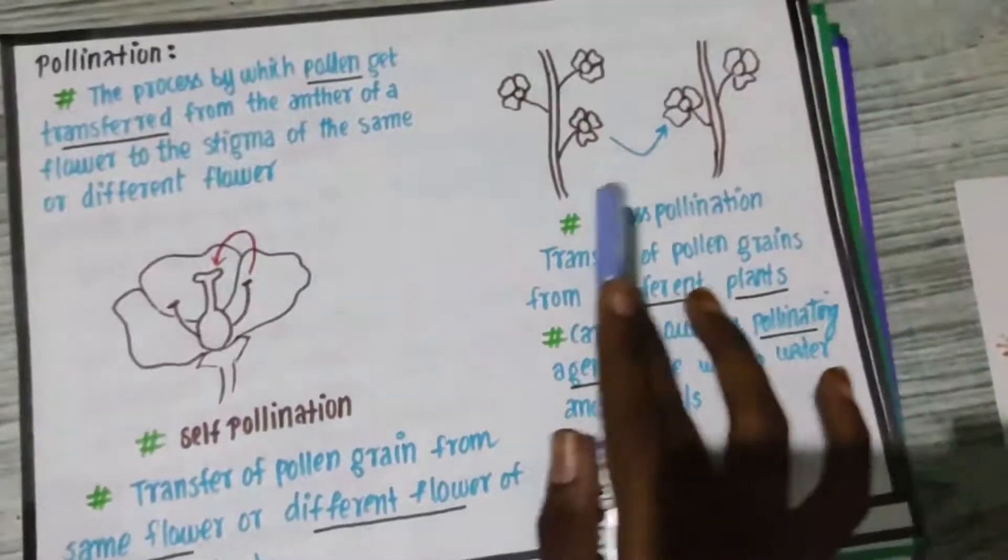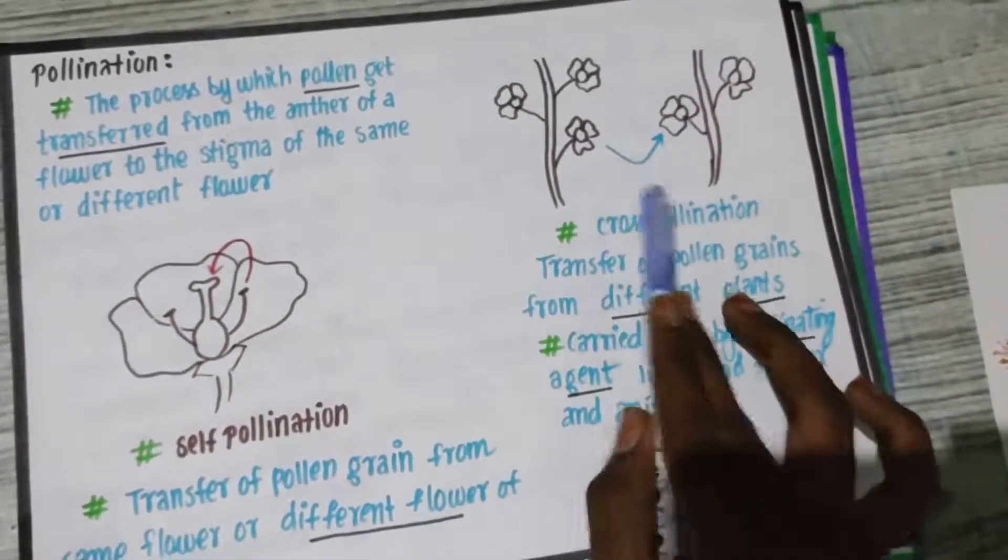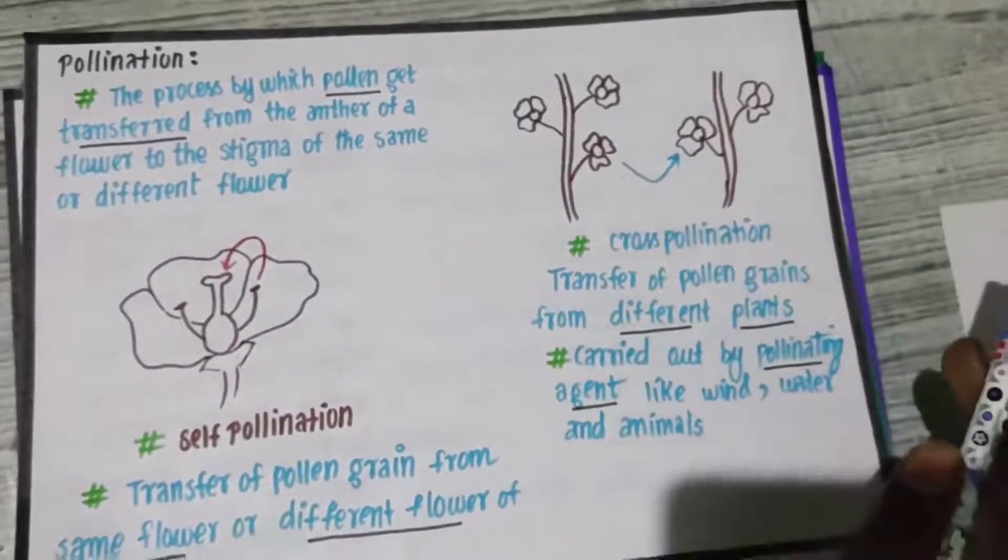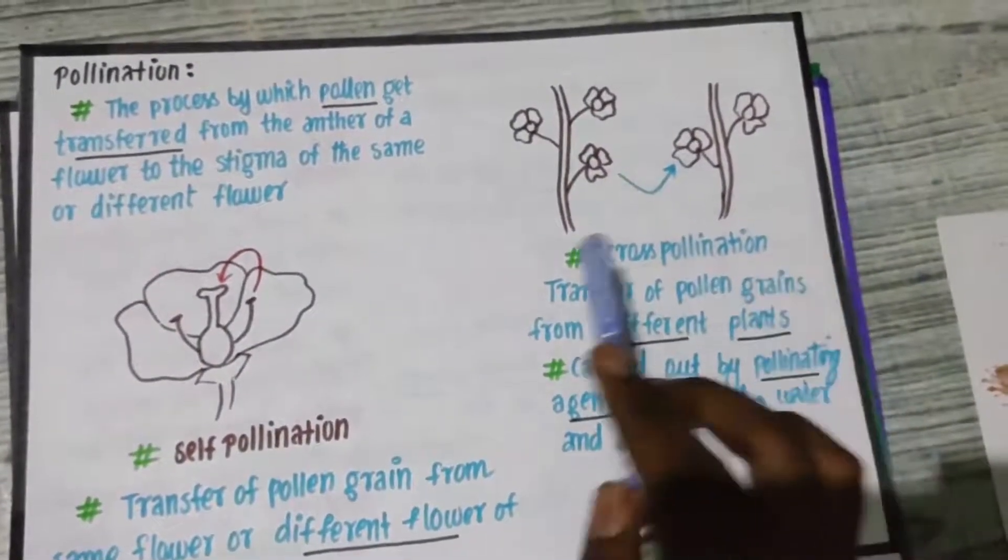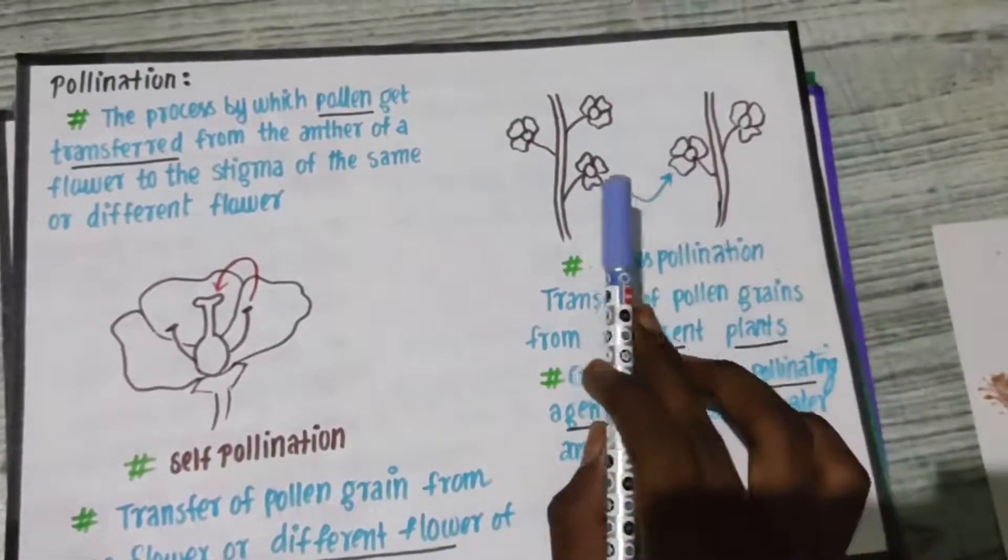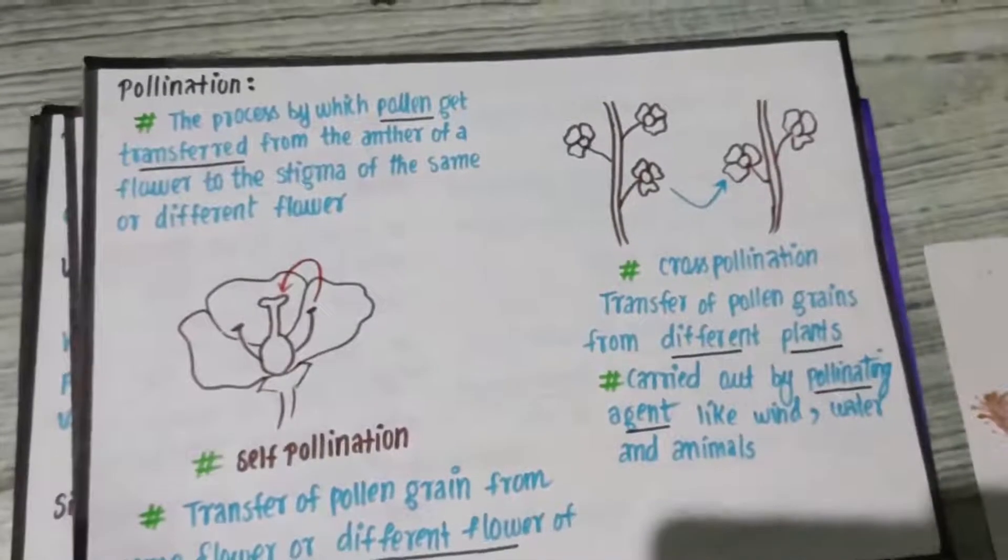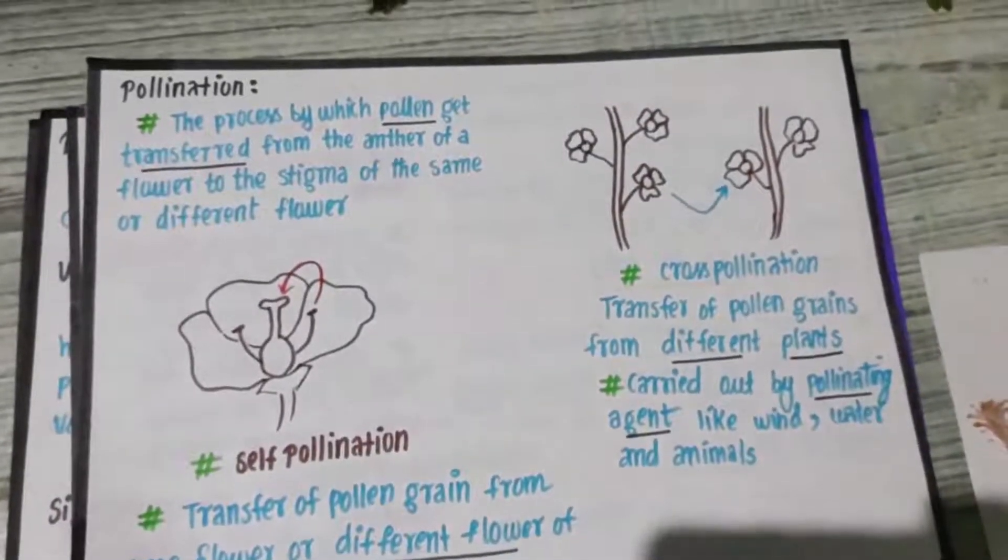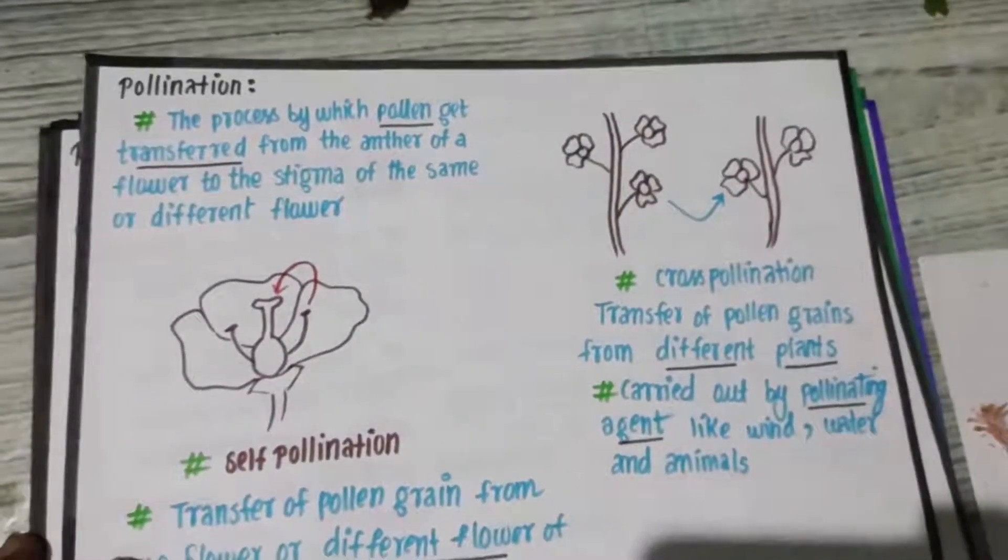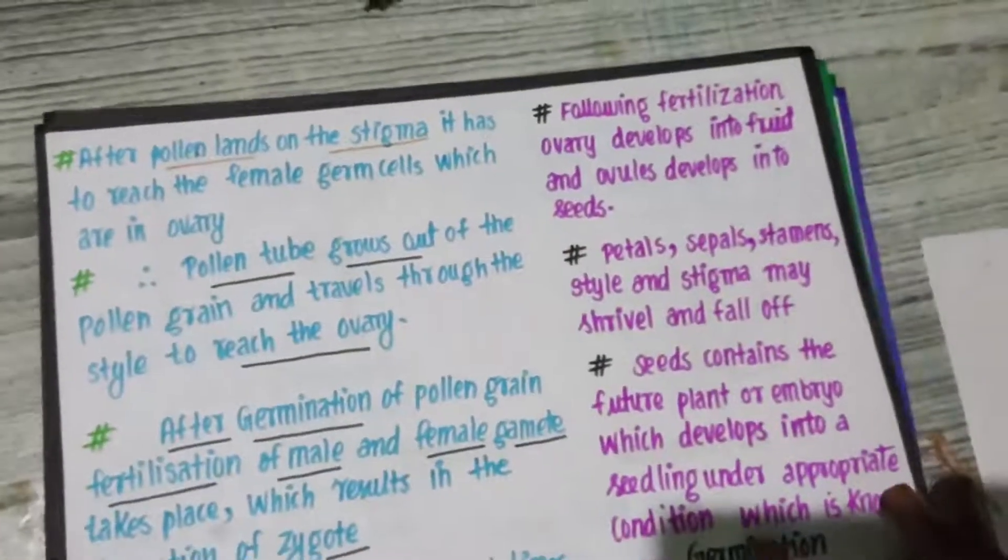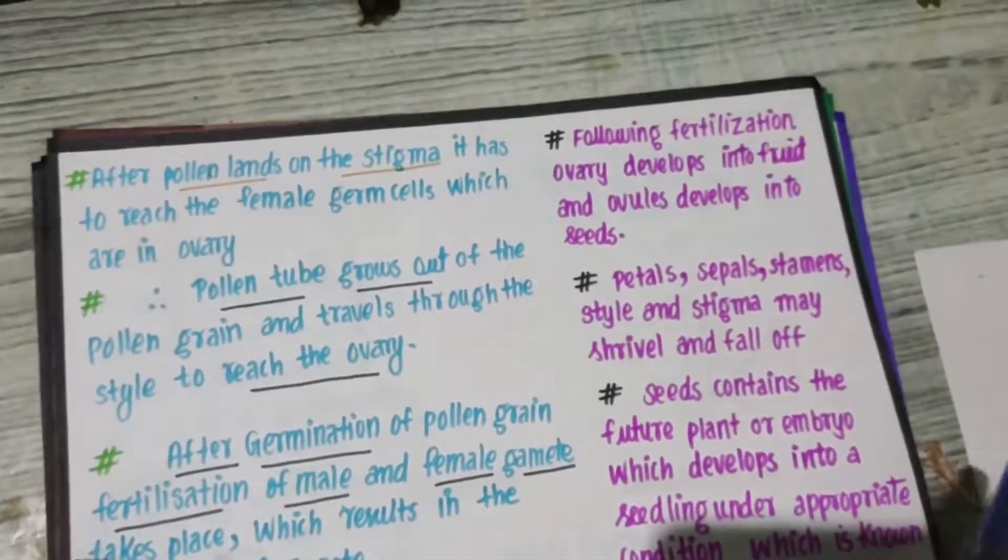It's going to reach to the next plant. It's going to be pollination. Then we will understand how this fertilization takes place now. Listen to me very carefully.